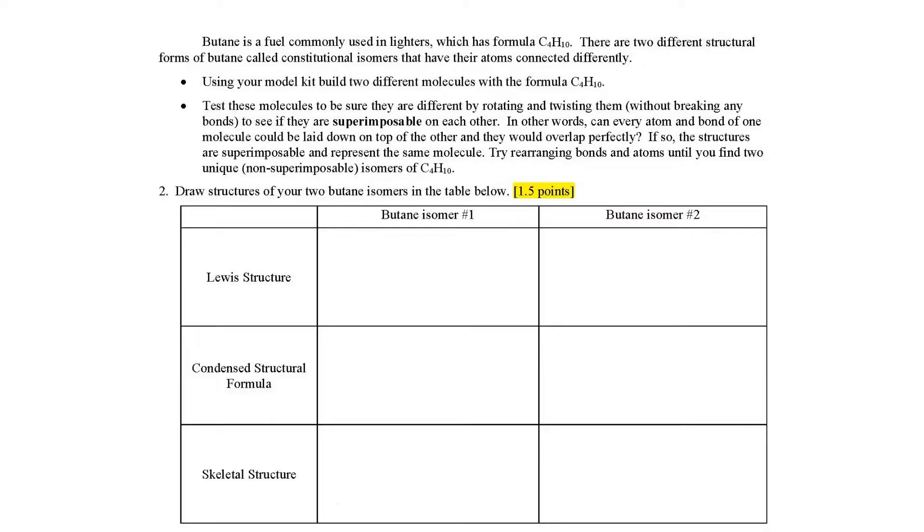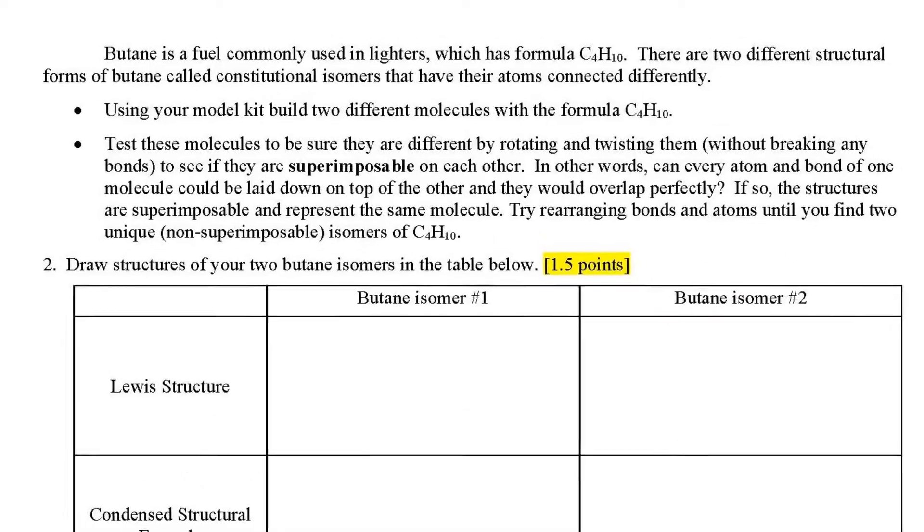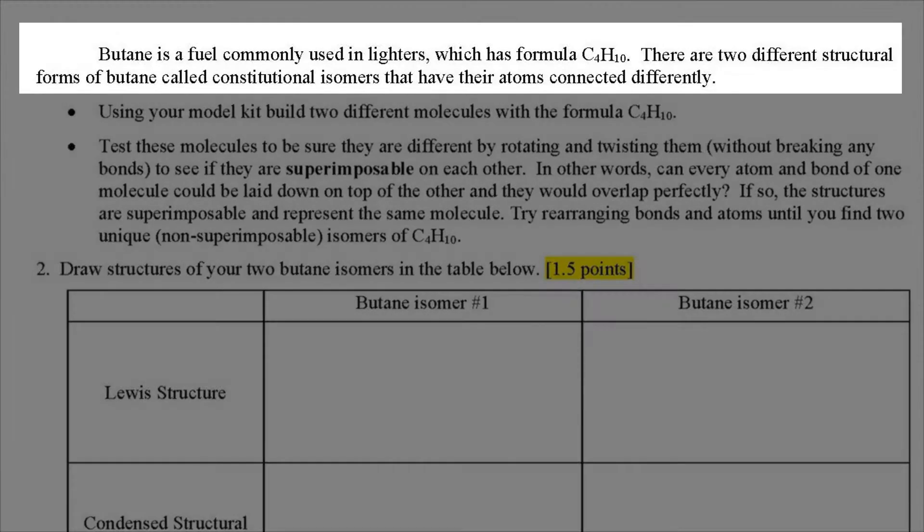The next question deals with isomers, which are molecules that have the same molecular formula, but different structures. Butane is a commonly used fuel, which has formula C4H10, and that's used to illustrate this concept. There are two different ways to connect atoms C4H10 that give two different Lewis structures. These are called constitutional isomers. They have the same formula, but their atoms are connected differently. Sometimes these are also called structural isomers.